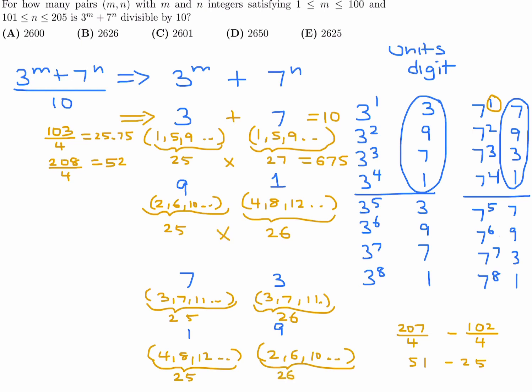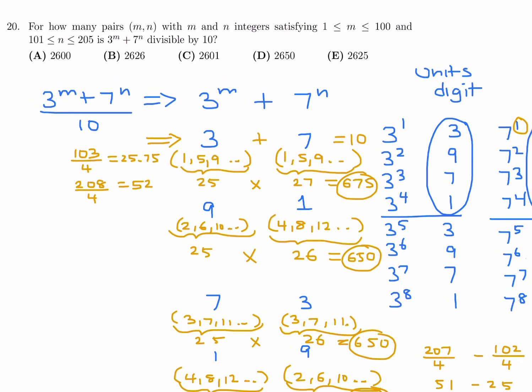And just like before, we have to multiply these guys. 25 times 26 is 650. This also gives me 650, and this also gives me 650. So in total, 675 plus 650 plus 650 plus 650, and that total is 2625. Therefore, number 20, the answer is E.